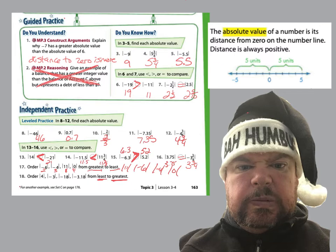We need to find the smallest number, which will be the closest number to 0, and that would be the absolute value of negative 3. Then the next closest to 0 would be the absolute value of negative 3 and 18 hundredths. Then we would have the absolute value of 4, and then the absolute value of negative 18 would be the farthest away from 0, so it would be the biggest one. From least to greatest: the absolute value of negative 3, then the absolute value of negative 3 and 18 hundredths, then the absolute value of 4, then the absolute value of negative 18.